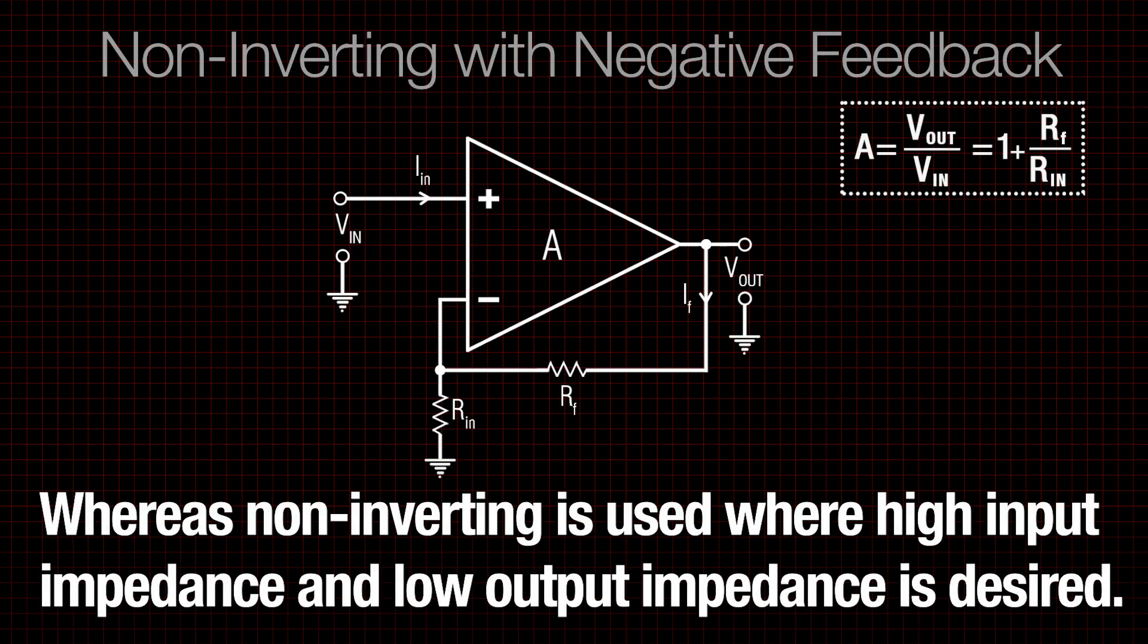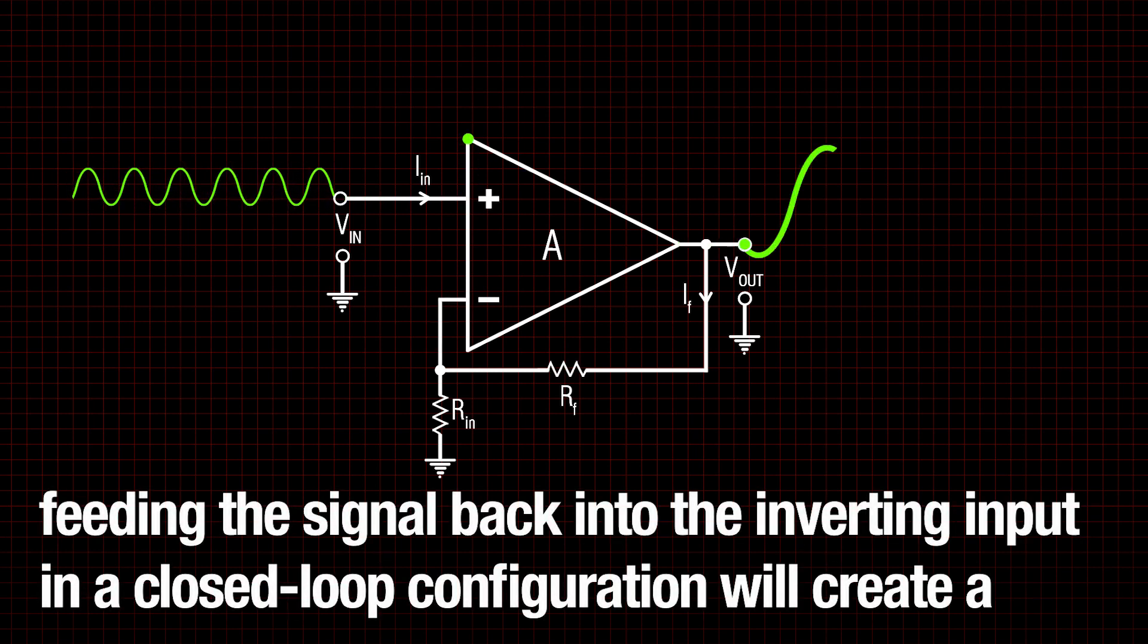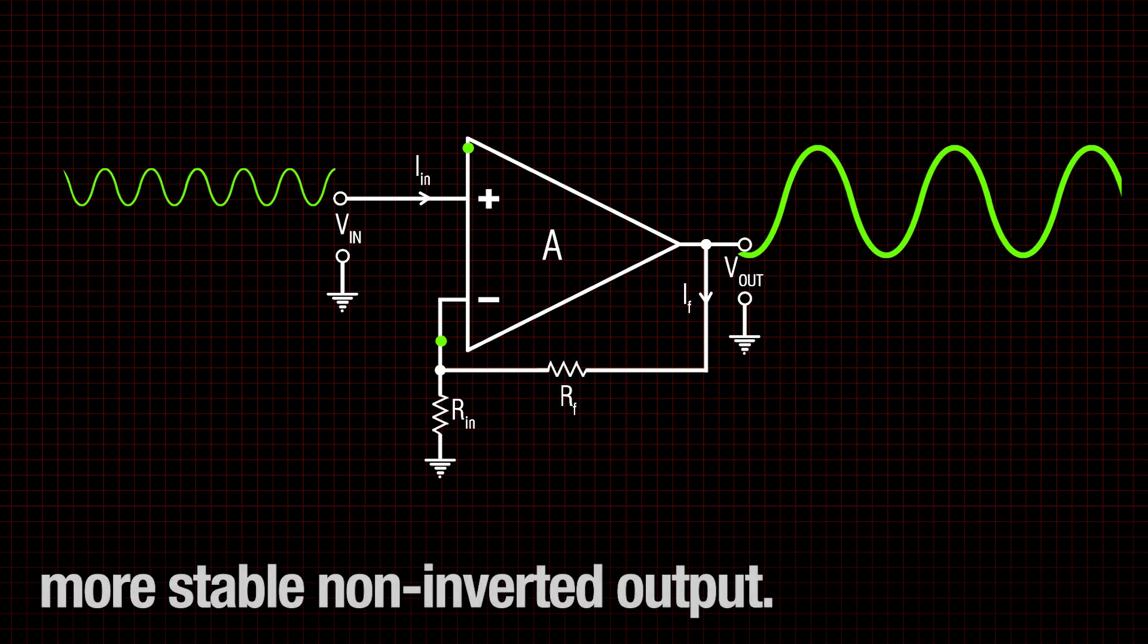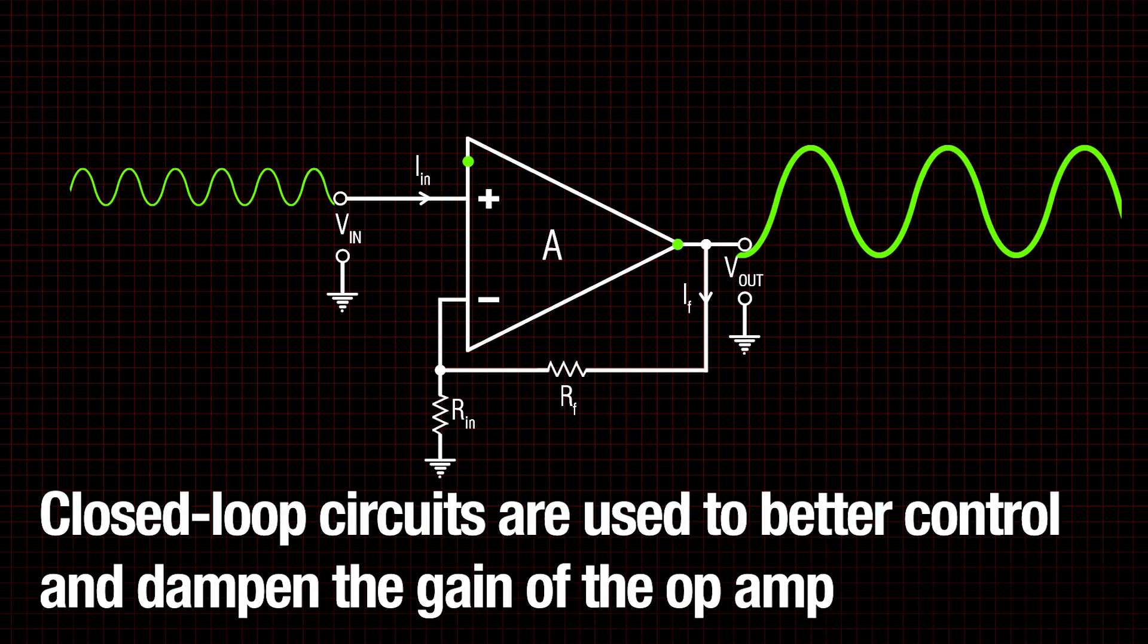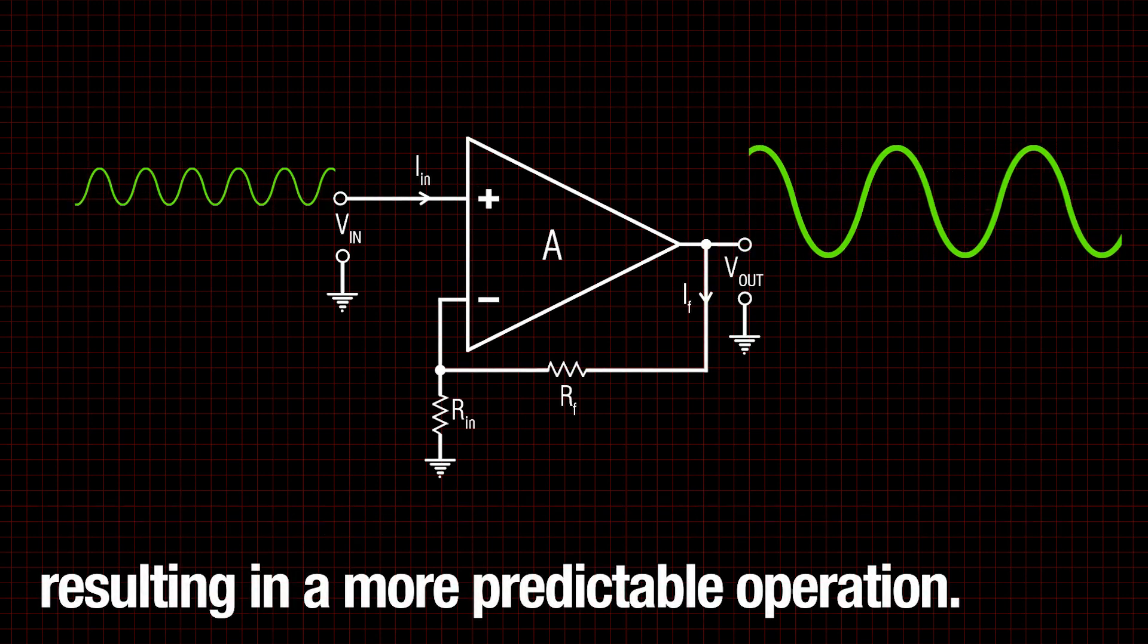Whereas non-inverting is used where high input impedance and low output impedance is desired. Just like having a stronger signal placed on the inverting input in an open loop configuration, feeding the signal back into the inverting input in a closed loop configuration will create a more stable, non-inverted output. Closed loop circuits are used to better control and dampen the gain of the op-amp, resulting in a more predictable operation.